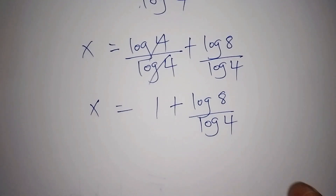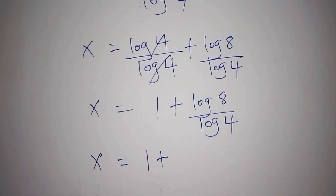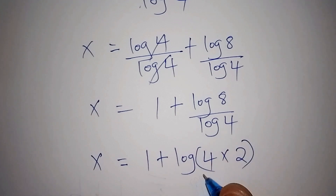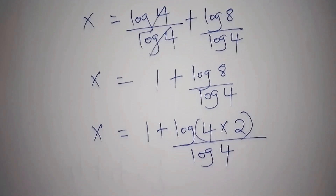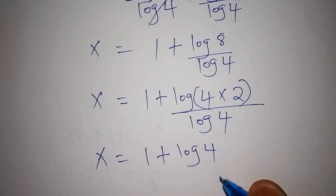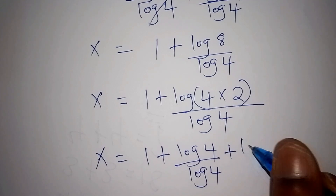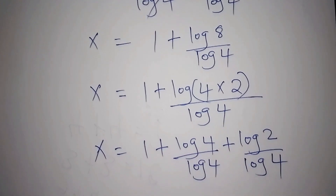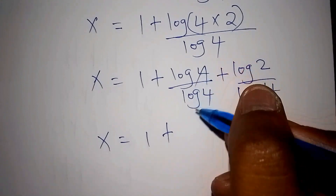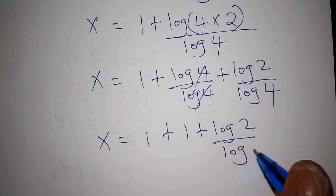In our next step x is equals to 1 plus the log of 8 all over the log of 4. The log of 8 can also be written as the log of 4 multiplied by 2 all over the log of 4. We take the log of 4 all over log of 4 separately — the multiplication sign changes to addition — so plus the log of 2 all over the log of 4. The log of 4 and log of 4 cancel, giving 1 plus 1, then plus the log of 2 all over the log of 4.